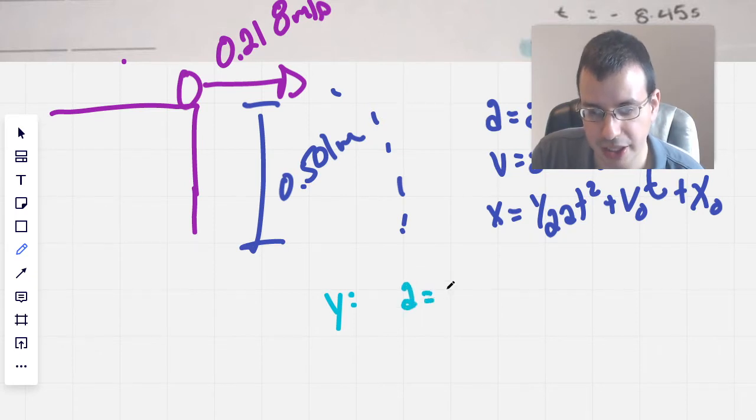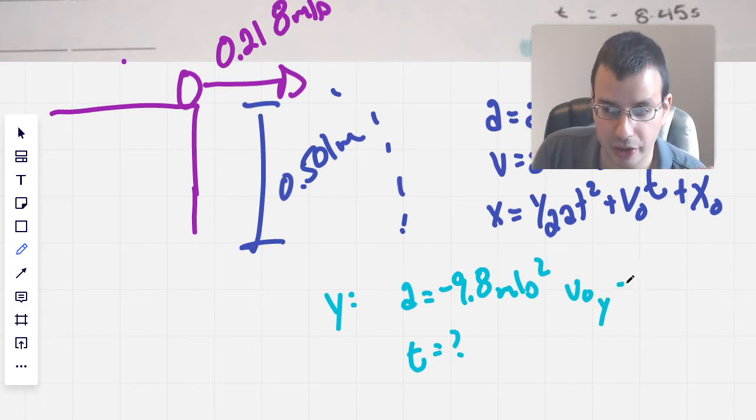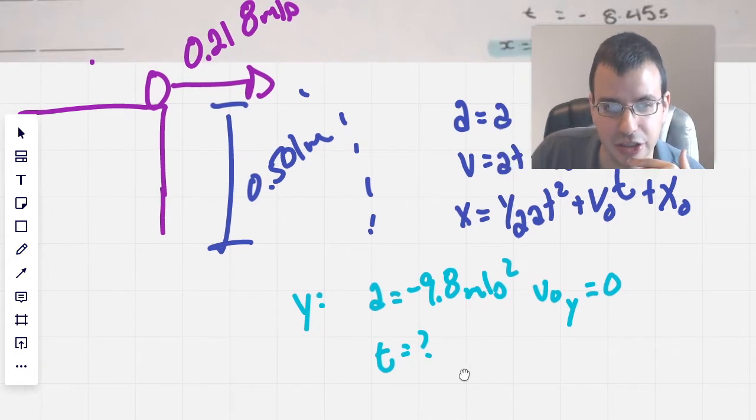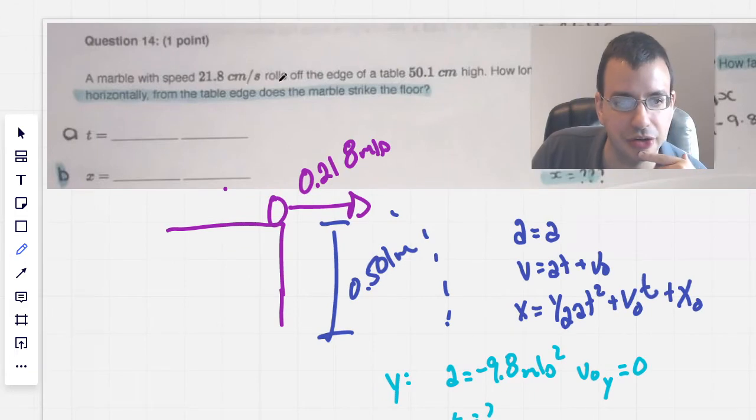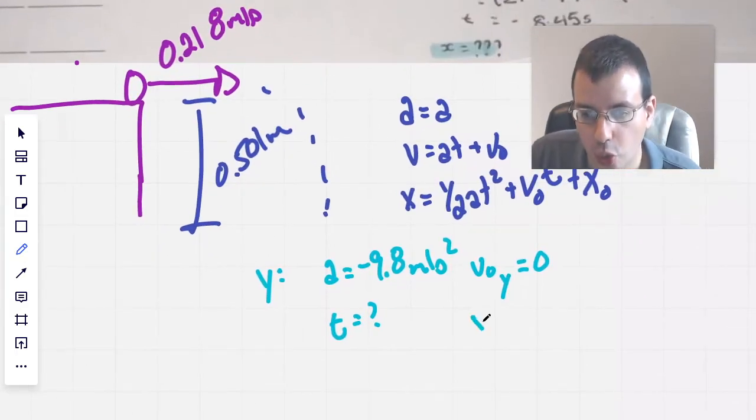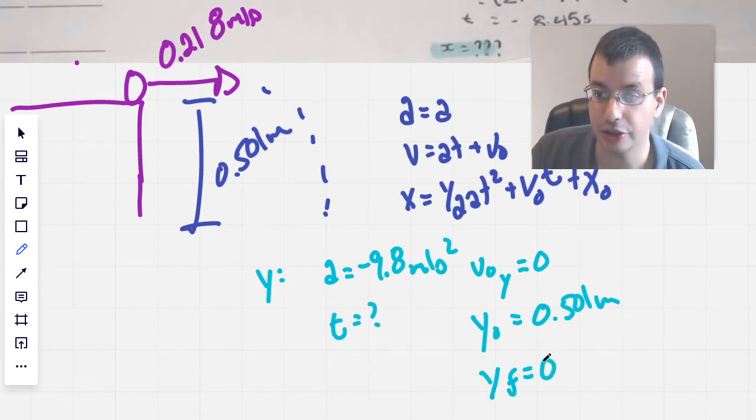So for a y dimension, acceleration will be negative 9.8 meters per second squared. t, well that's a question mark, we don't know what that is. Initial speed in the y direction is going to be zero. Even though we have 0.218 meters per second, that's in the x direction. Y direction is soon to be zero. I think it says horizontal. We're going to assume that this is a horizontal table. Y naught, which is the initial height, will be 0.501 meters. I'm going to say y final equals zero. I'm just going to say the ground is zero.